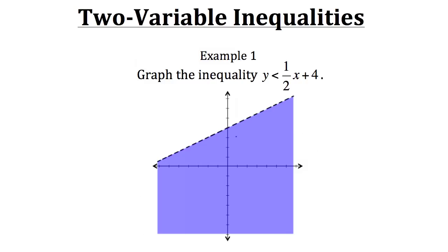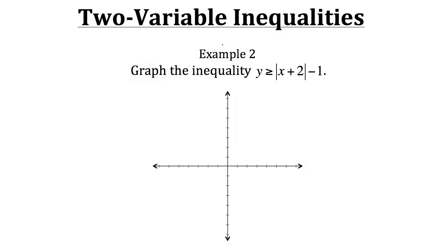Now let's take a look at another example. With example two we want to graph the inequality y is greater than or equal to the absolute value of x plus two, minus one. This time we're working with absolute value. Again, before we graph we want to keep in consideration what the inequality is — this time it says greater than or equal to. Since it could be equal to, we'll actually draw a solid line like we normally do with graphs.